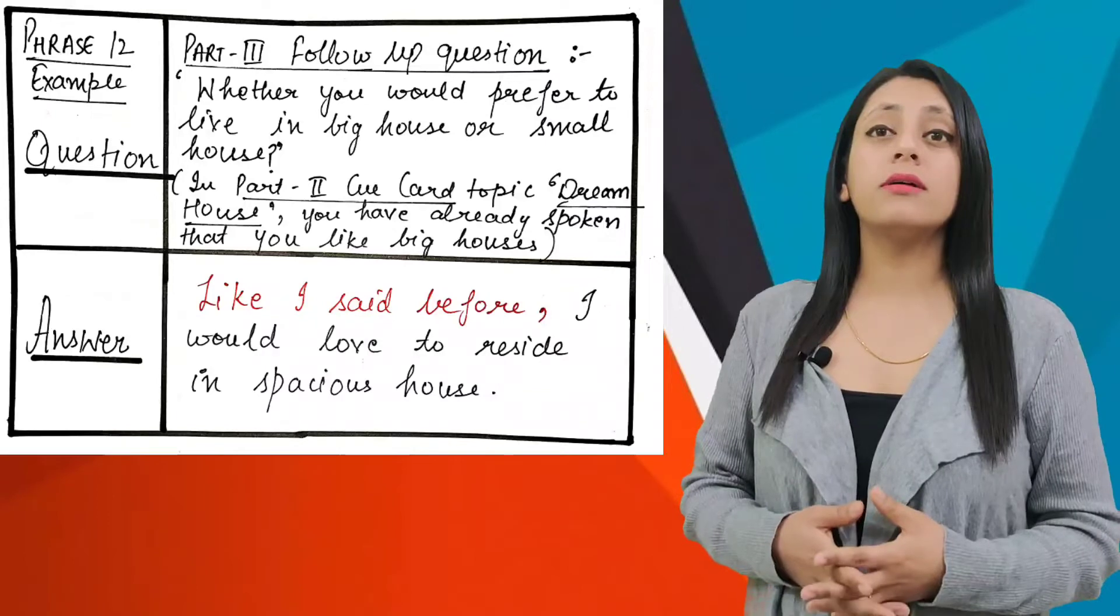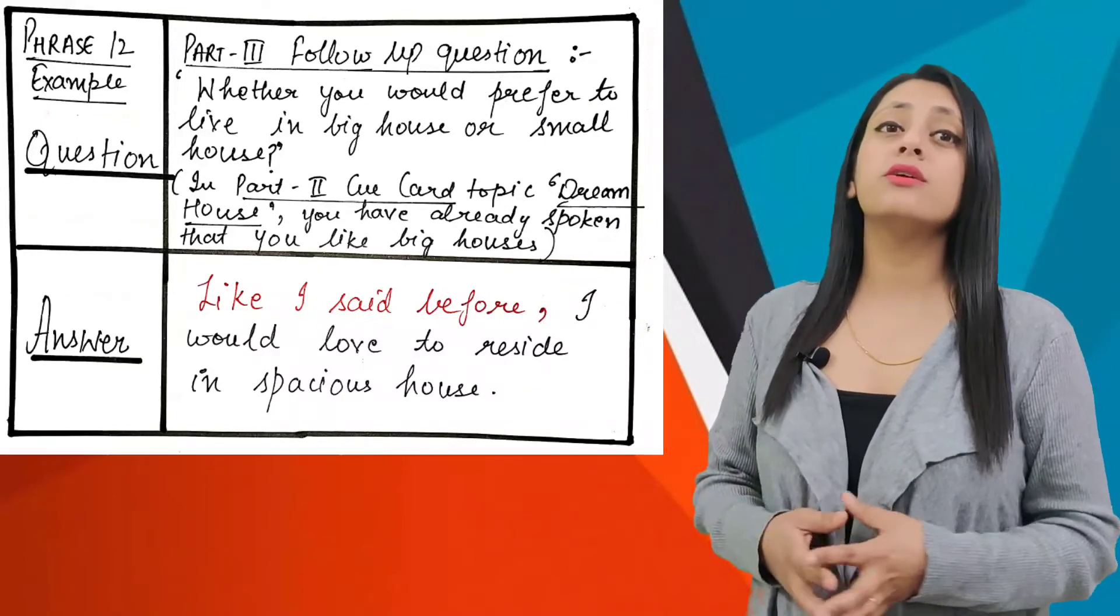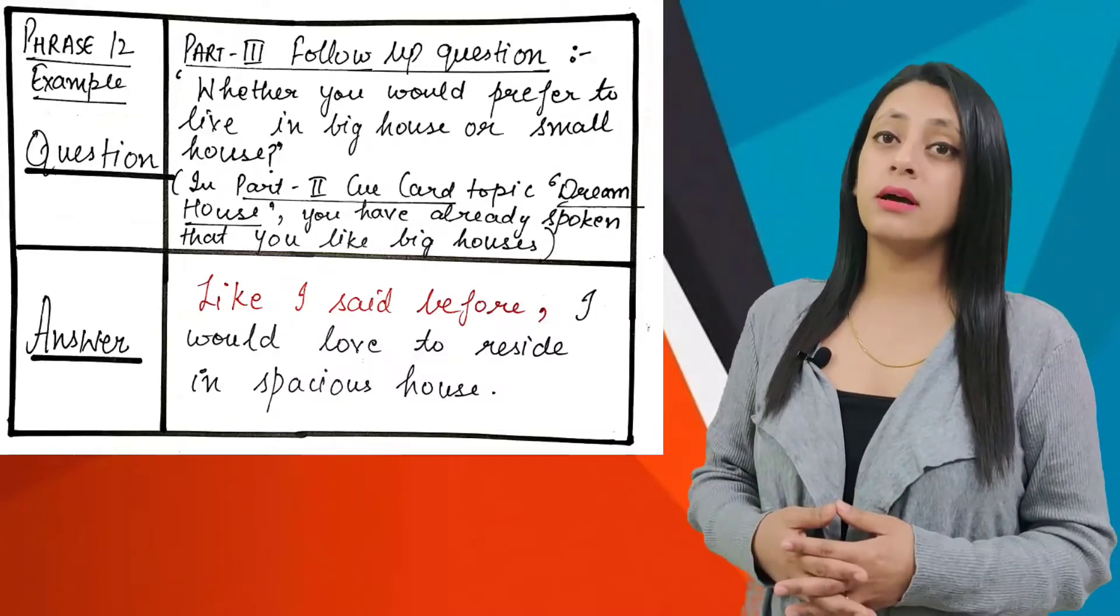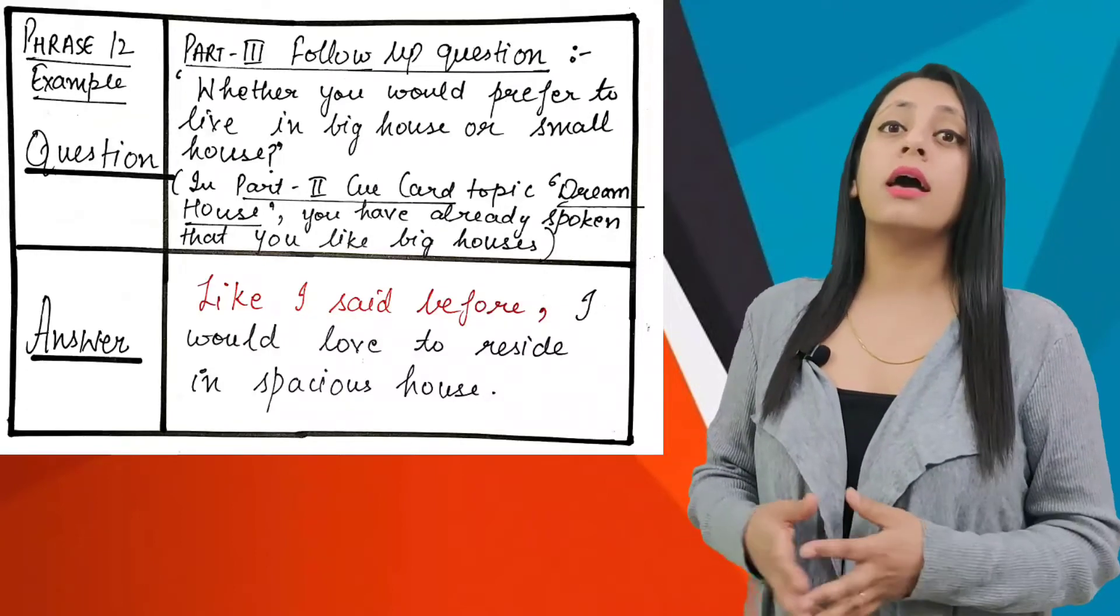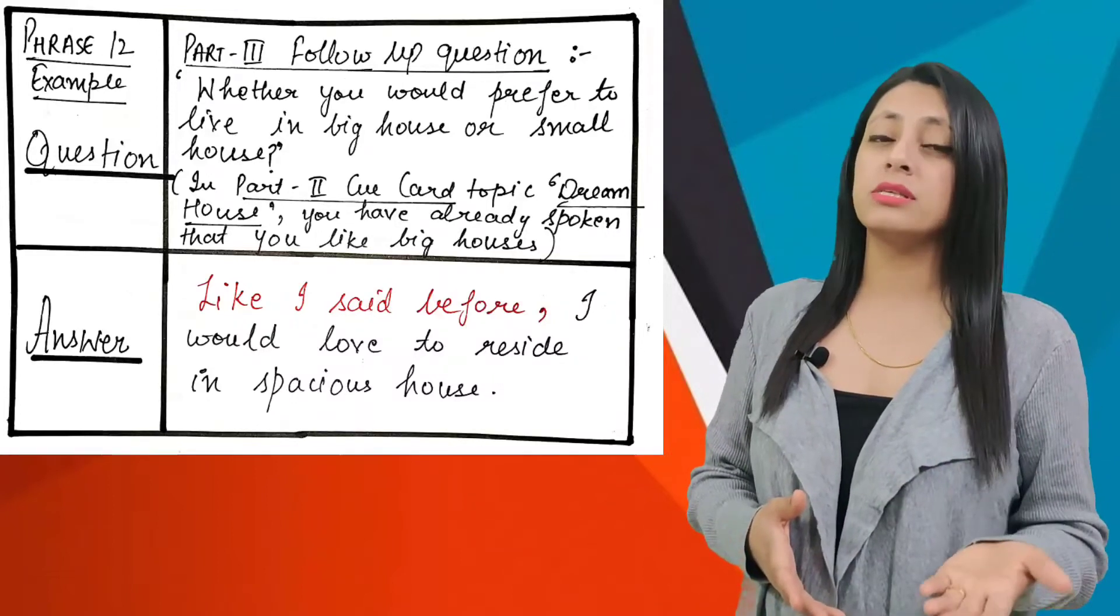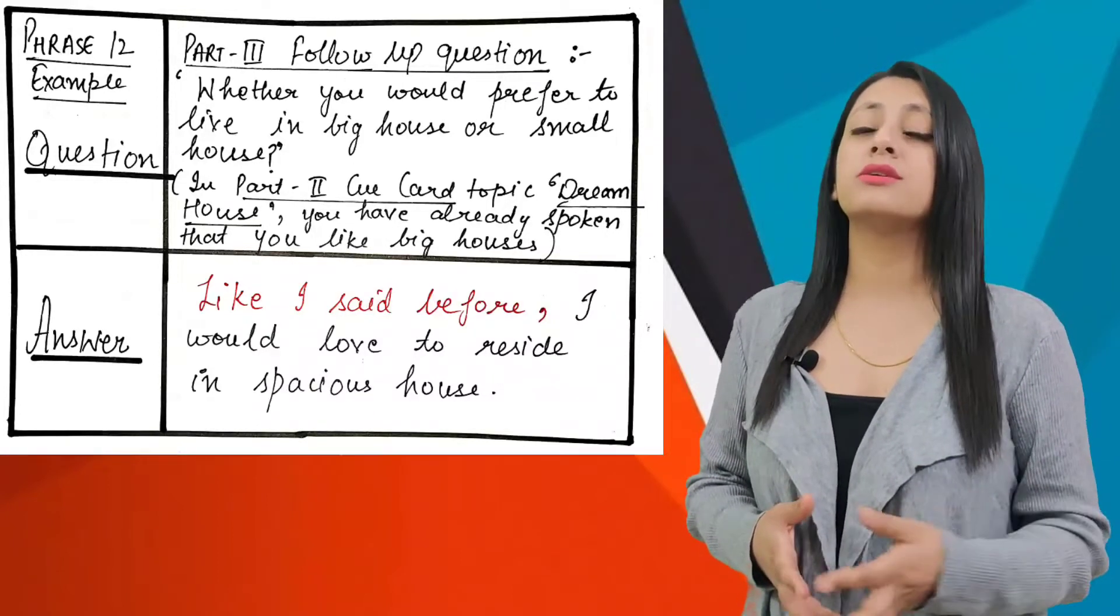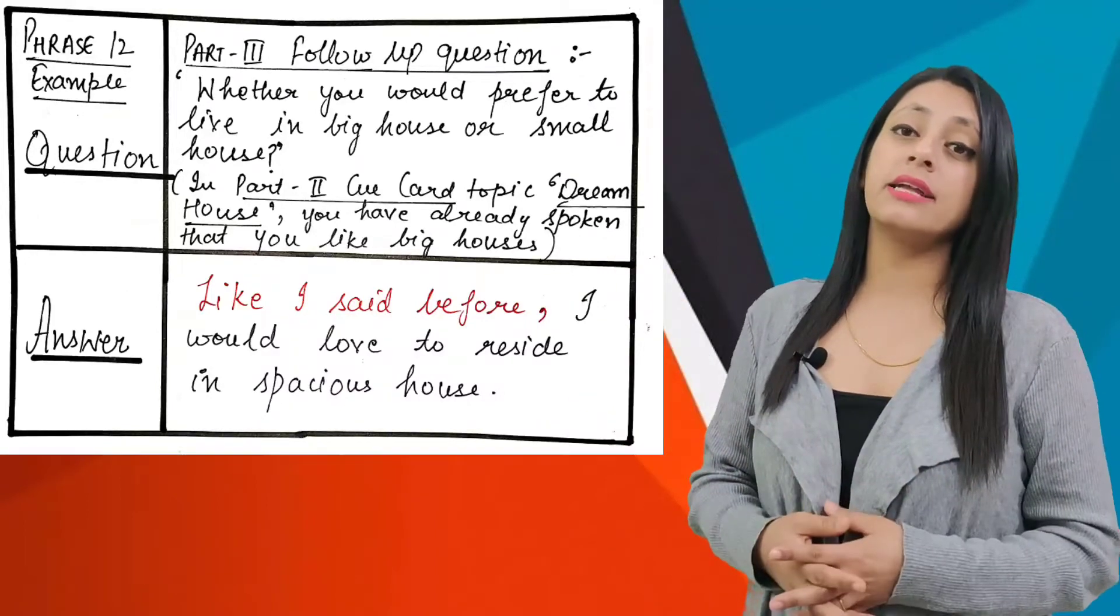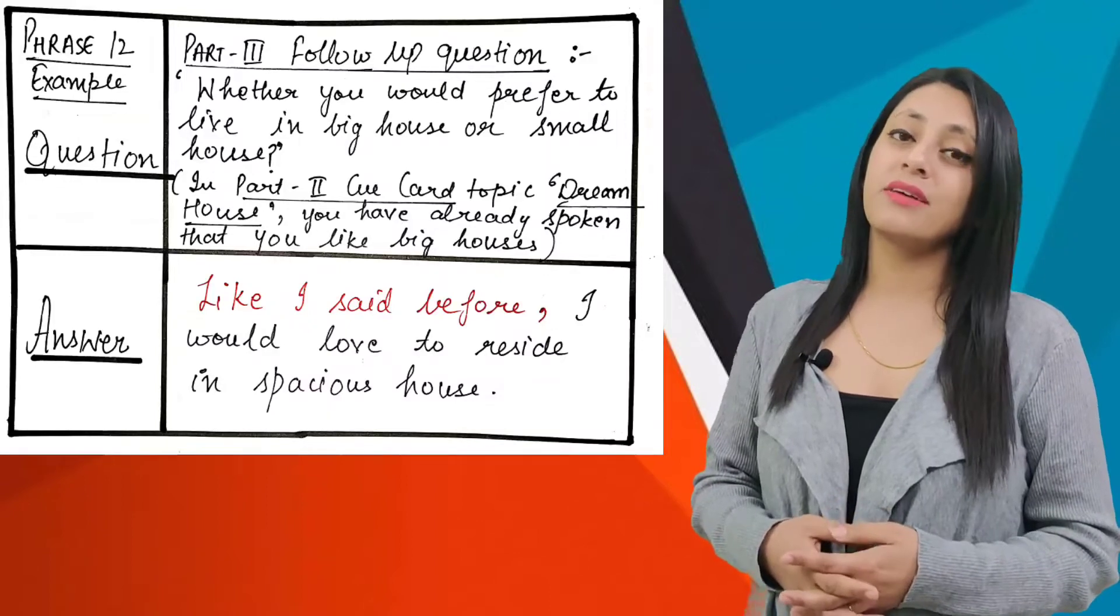For example, in follow-ups, the question is asked whether you would prefer to live in a big house or small house. And your cue card topic was talk about dream house, and you already mentioned that you like big houses. Then in that case, you can answer this question like: Like I said before, I would love to reside in a spacious house.